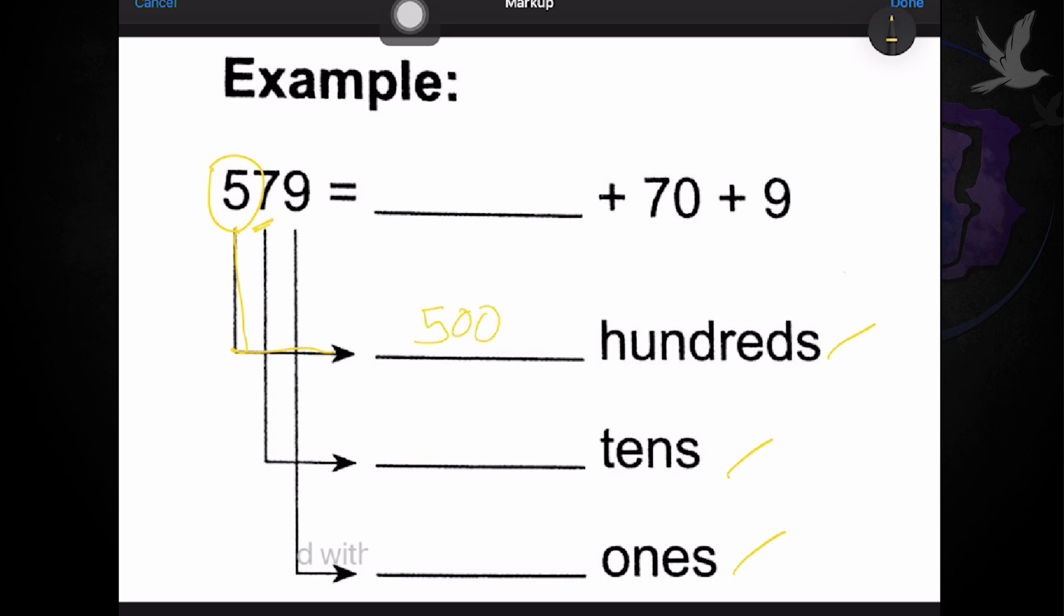And since the digit seven is in tens, seven should be skip counted by ten. So, that's ten, twenty, thirty, forty, fifty, sixty, seventy.